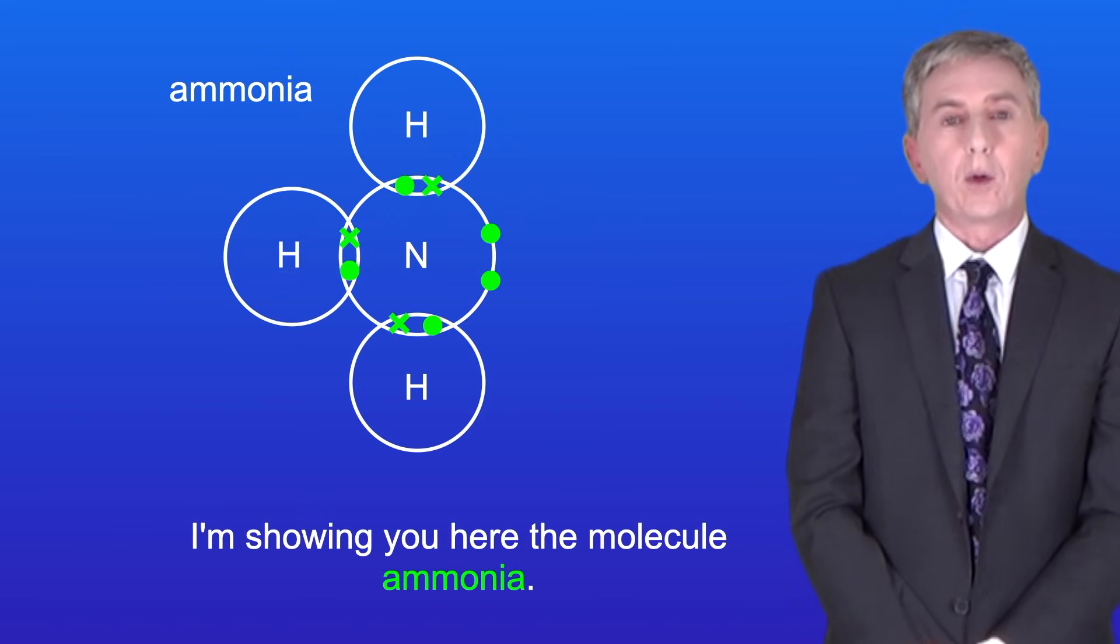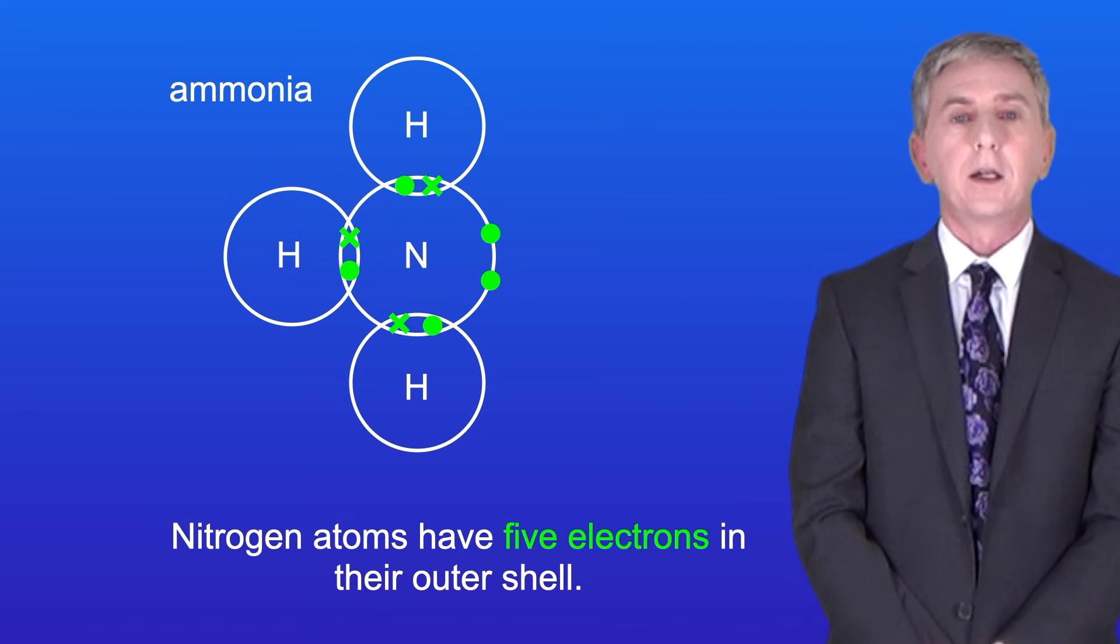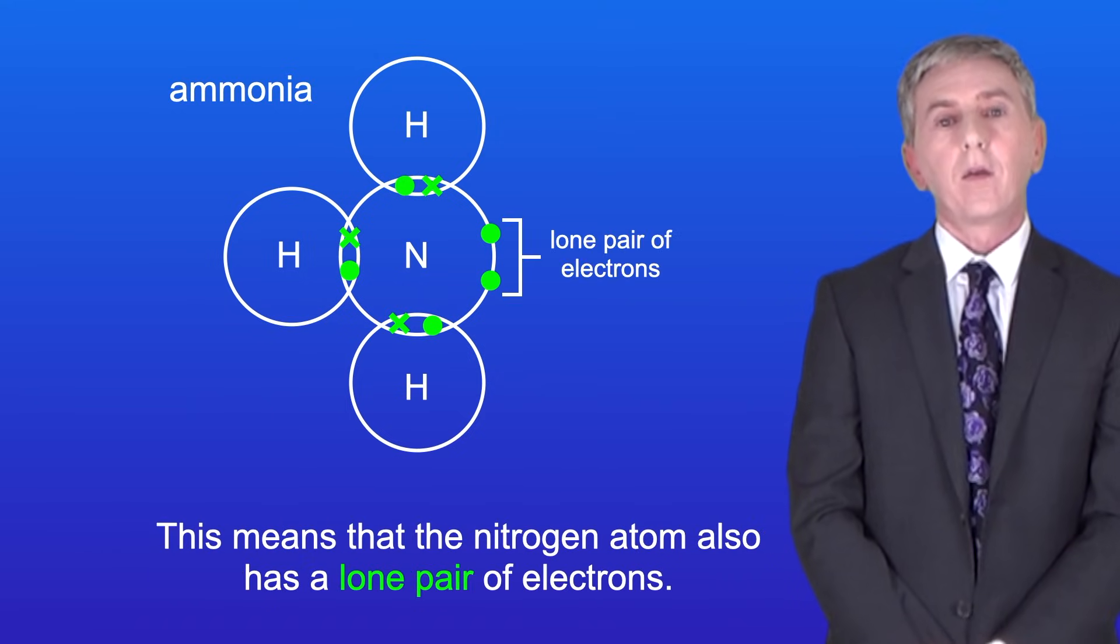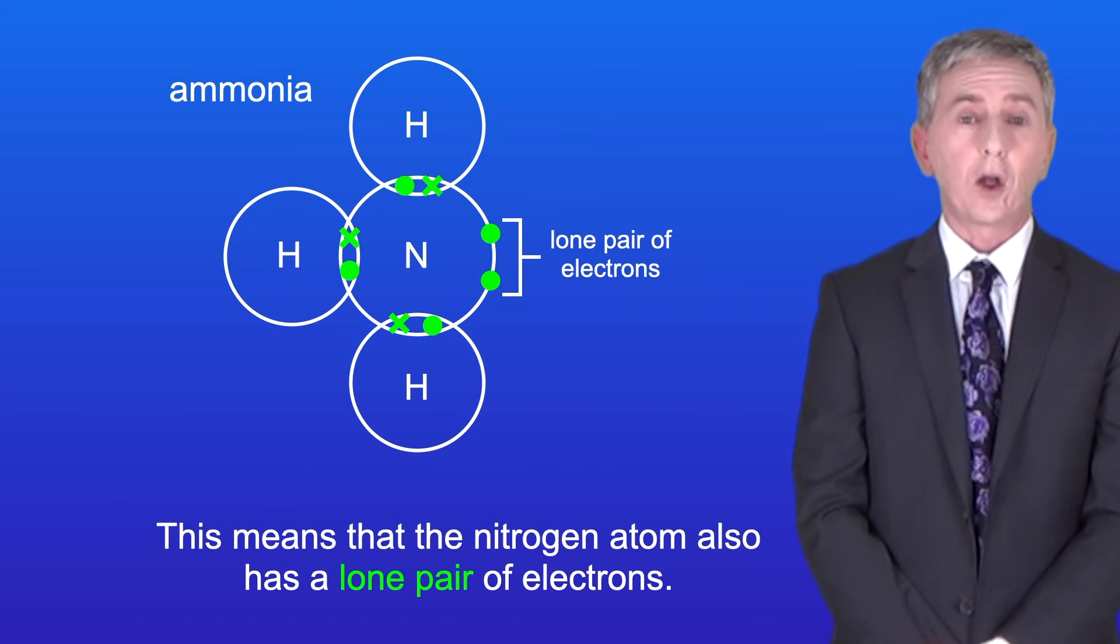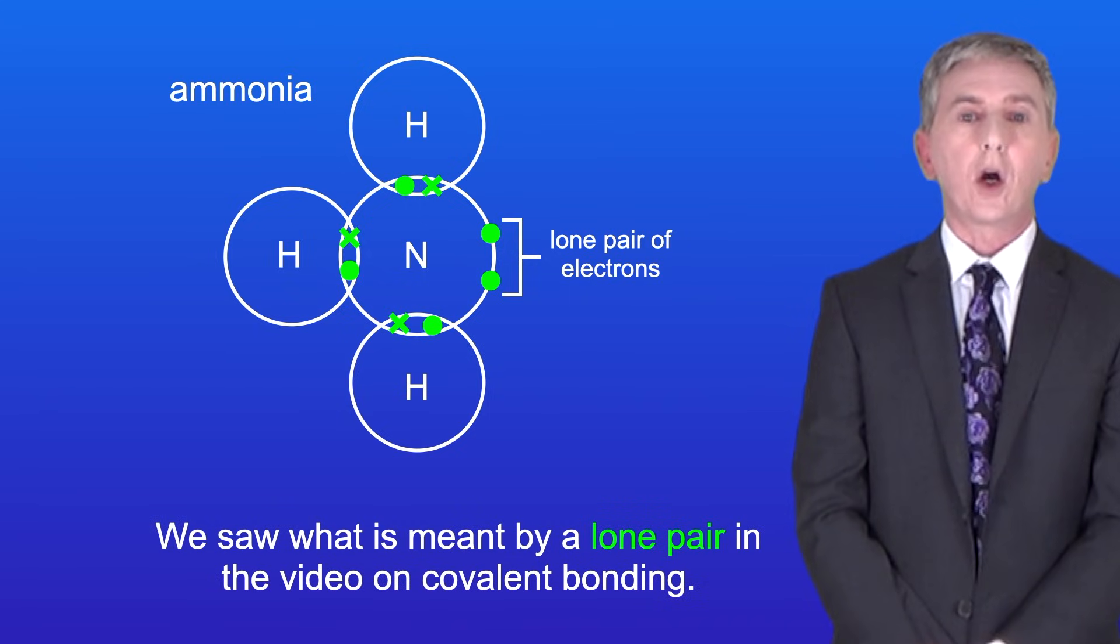I'm showing you here the molecule ammonia. Nitrogen atoms have got five electrons in the outer shell. In ammonia, the nitrogen atom has formed three covalent bonds to hydrogen atoms. This means that the nitrogen atom also has a lone pair of electrons, and we saw what's meant by a lone pair in the video on covalent bonding.